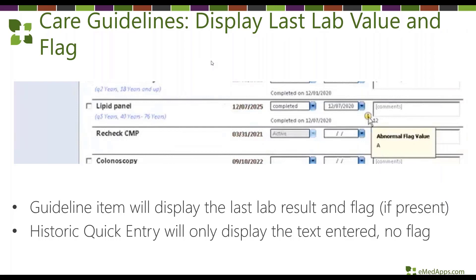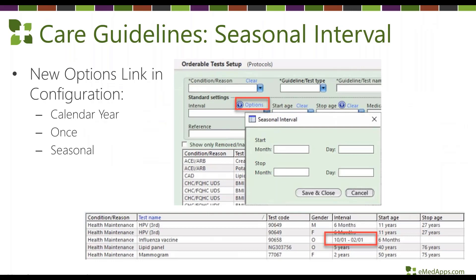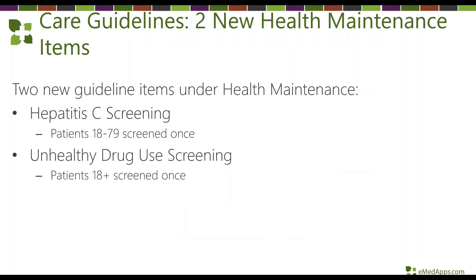On the care guidelines page display, Next Gen has added a lab value indicator — a little yellow circle for items like a lipid panel. Hovering over it tells you if there's an abnormal flag value such as high, high-high, low, or low-low. There's also a new seasonal interval option allowing you to make a care guideline due only within certain months of the year, so for example a flu shot won't show as due in July.